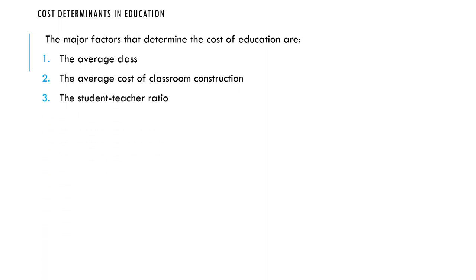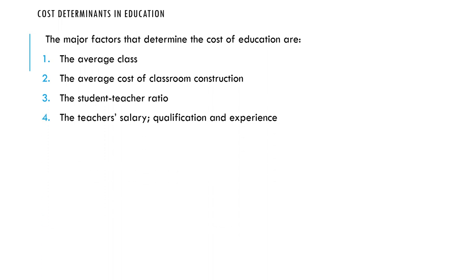Then you look at the student-teacher ratio. The student-teacher ratio and the average class size work closely together. If you have 40 students, especially in primary school where a teacher is attached to a particular class, that's straightforward. But if it's subject-wise, then the student-teacher ratio becomes very vital — how many students will be in the class or lab for one teacher to attend to. You need to work that out and take it into consideration to know how much will be required.